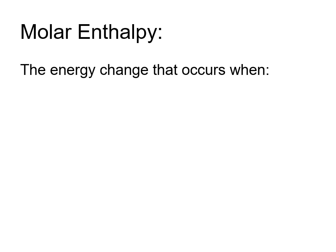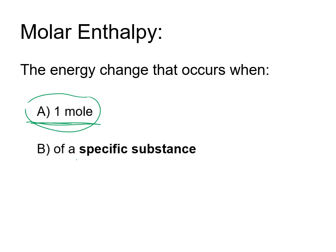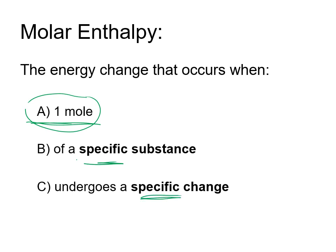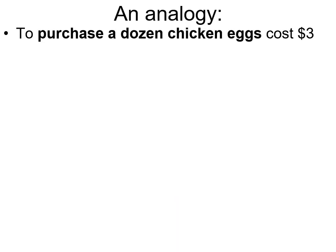There are three things you have to be aware of with molar enthalpy, and they're not explicitly written down for each value. First: molar enthalpy refers to one mole, which seems straightforward, but in a reaction with various molar ratios you have to be aware of which substance it applies to. Second: it has to be for a specific substance. Third: that substance has to be undergoing a specific change. So: one mole, of something specific, going through a specific change.